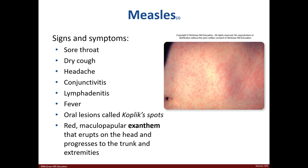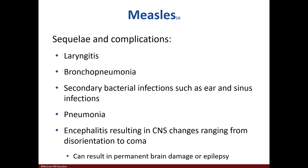Some signs and symptoms of measles include a sore throat, headache, fever, and characteristic Koplik's spots in the mouth. There is also a rash that starts on the head and then works its way down. In a small number of cases, complications like laryngitis and bacterial infections may arise, and there may also be swelling of the brain.